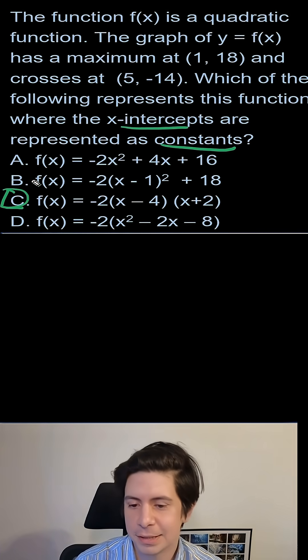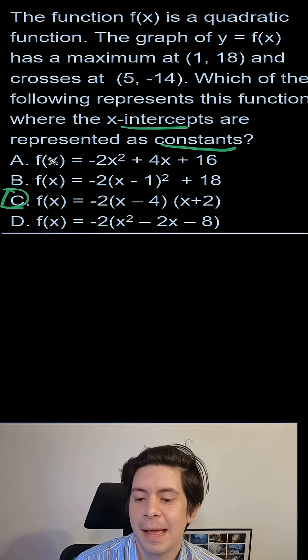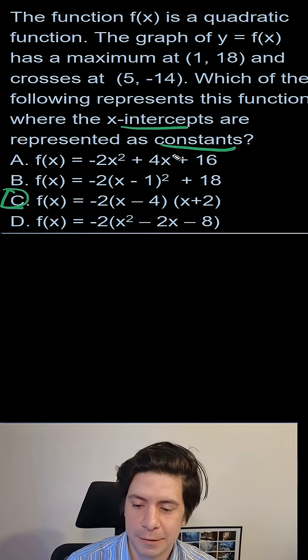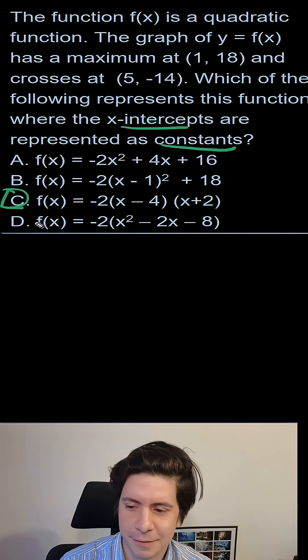This one I can just look at and see. B is vertex form, right? (1,18) is the vertex here. A is standard form where everything is just foiled out. And then D is sort of in between A and C where it's started to get factored but not fully.